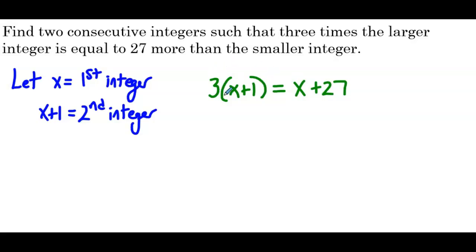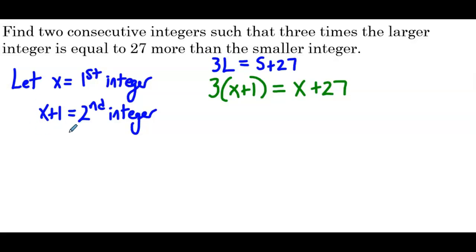If jumping to the equation directly is a challenge, just write it out in words first: 3 times the larger, so 3L, is equal to 27 more than the smaller, so s plus 27. The way we defined it, s is that first integer (the smaller one), x plus 1 is the larger, and we substitute those variables into the equation. Use that strategy by all means if it helps.